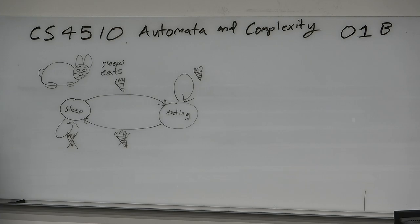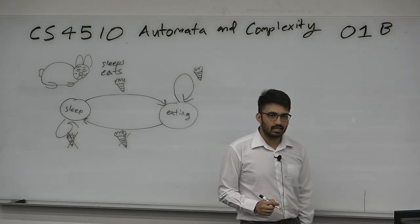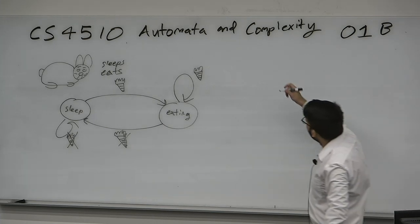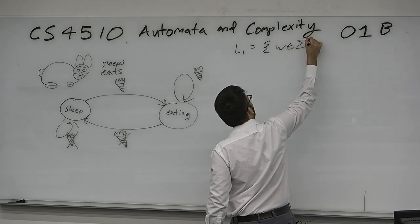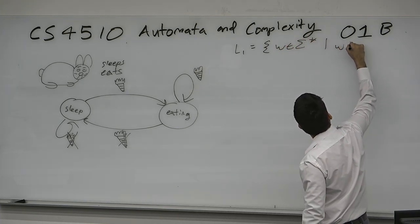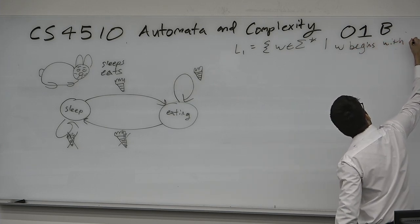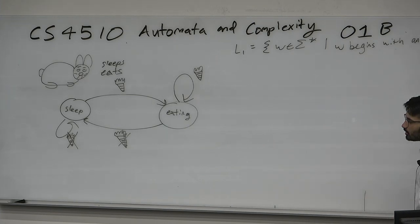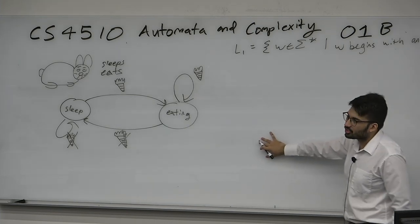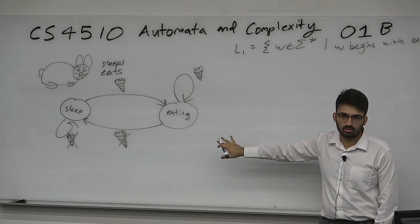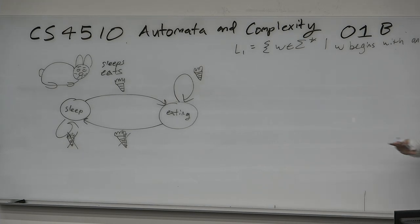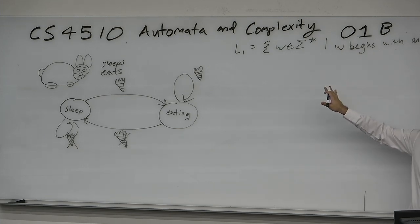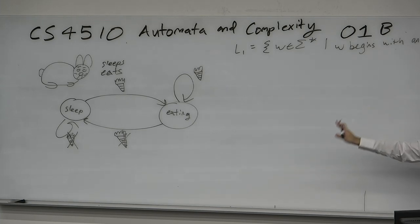Our first language was L1: w is in Σ* and w begins with an 'a'. Let's try and see if we can build such a system. There's a name for this — it's called a deterministic finite automaton. Let's try to build a DFA for this language.